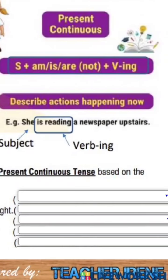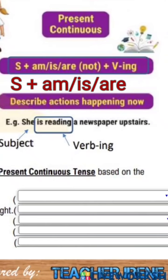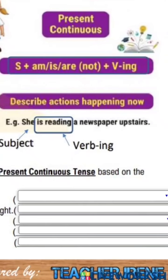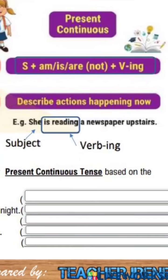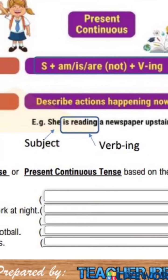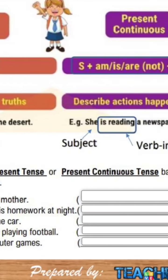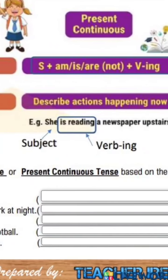Biasanya present continuous dia akan tambahkan -ing pada verb. Kalau kamu lihat: subject plus am, is, are atau not — kalau kita nak guna not, tambah dengan verb-ing. Present continuous describe actions happening now — menerangkan apa yang sedang berlaku sekarang. Dan biasanya kalau kamu nak bezakan senang saja, di sini kita lihat tadi dia tak ada 'is', nampak? Ini ada 'is' dan ditambah dengan -ing pada verb.